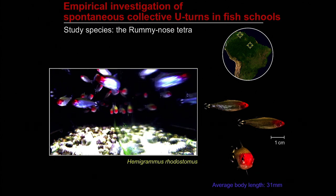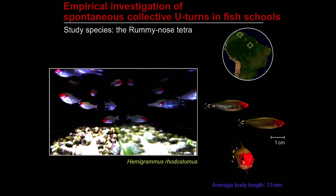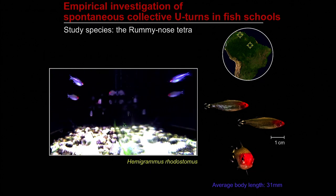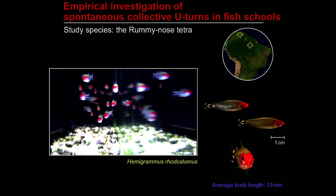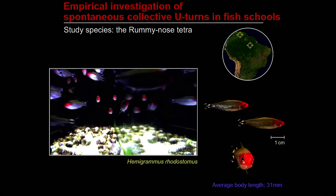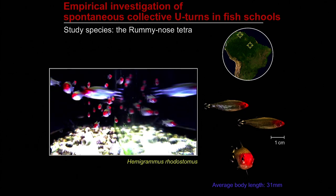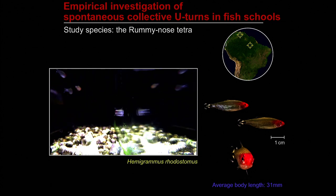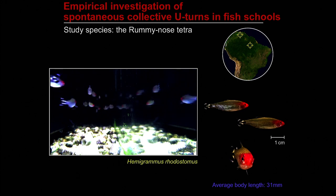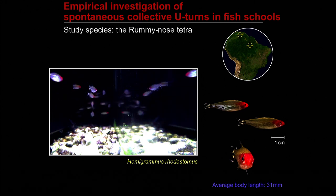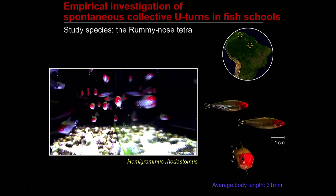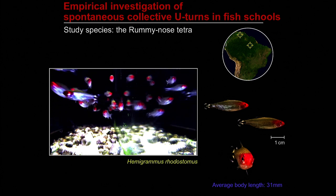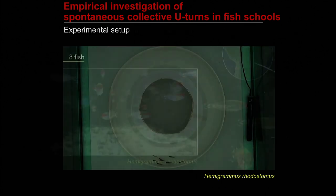The first important step is to find both a species and a situation in which we can observe in controlled conditions such spontaneous changes in collective behavior. The species we have studied is the rummy-nose tetra, Hemigrammus rhodostomus, which is a small tropical fish species that exhibits strong schooling behavior, can be handled easily in controlled conditions, and has an average body length of about 30 millimeters.